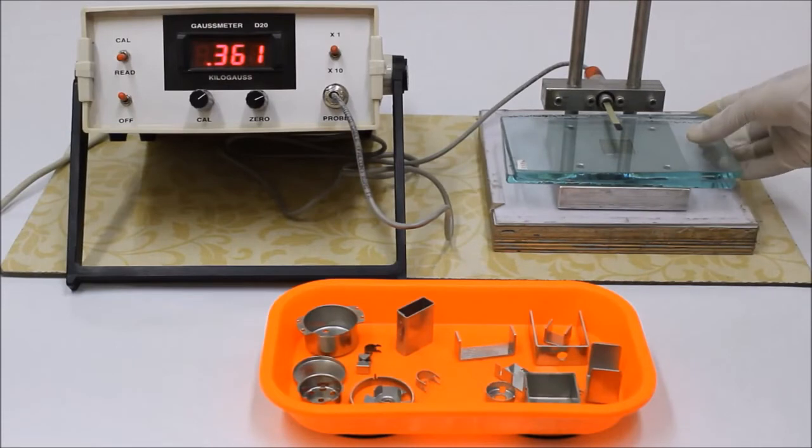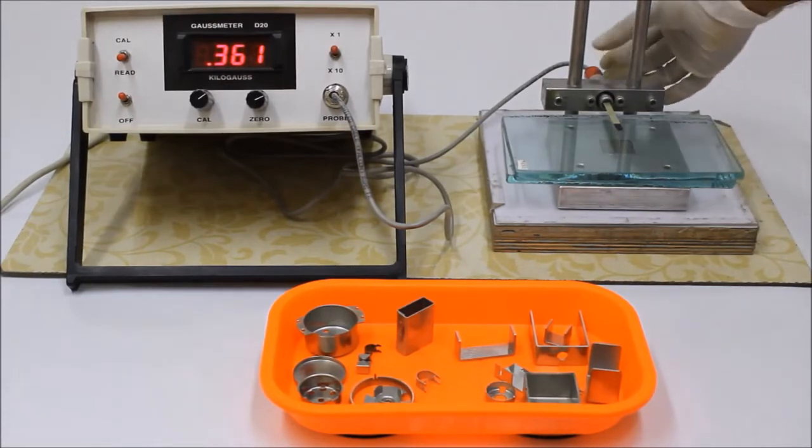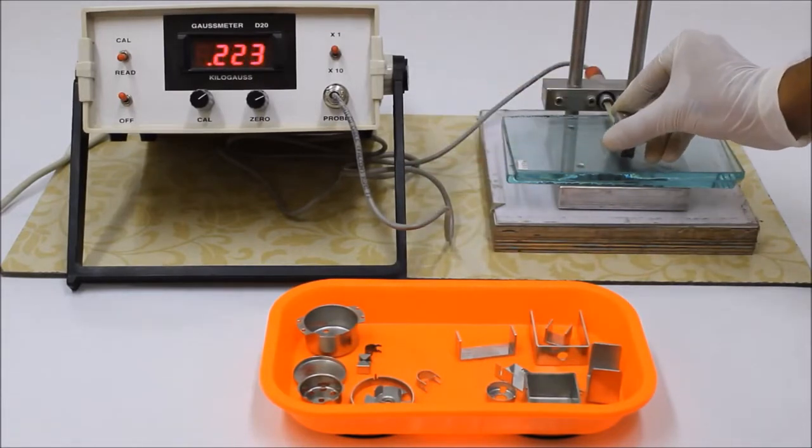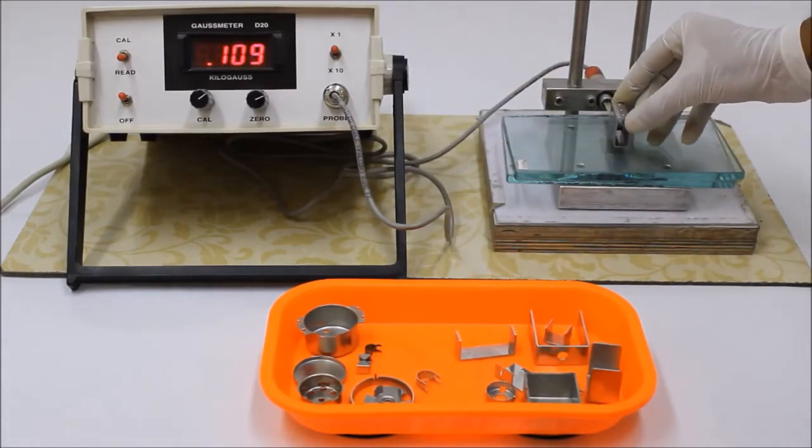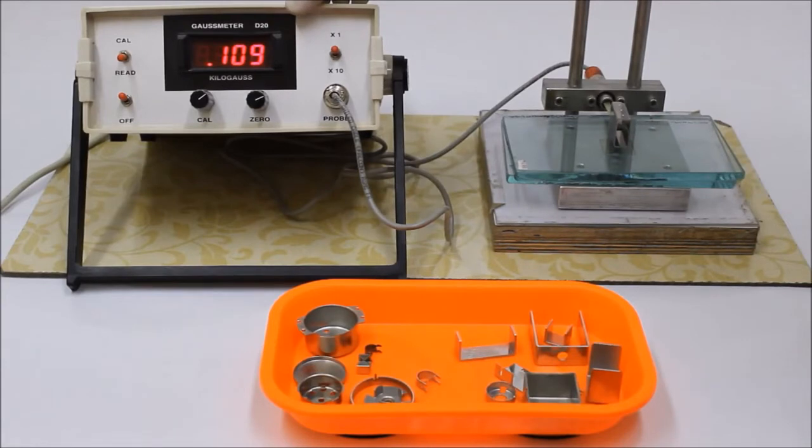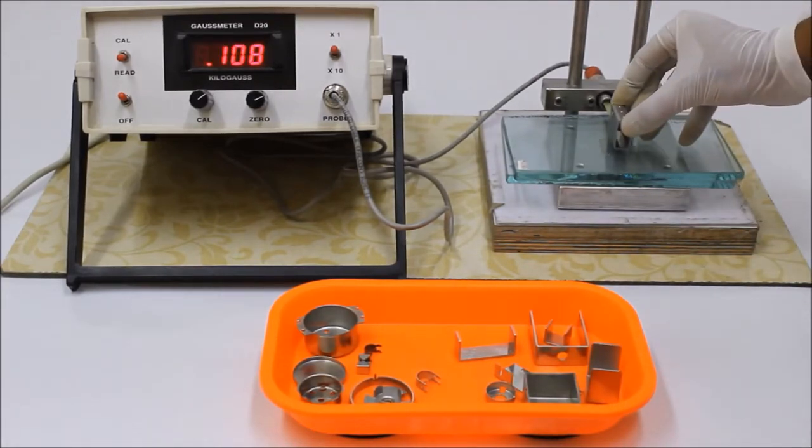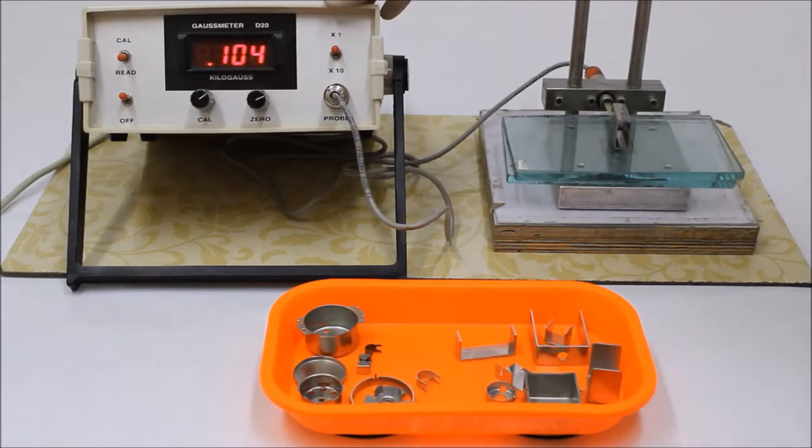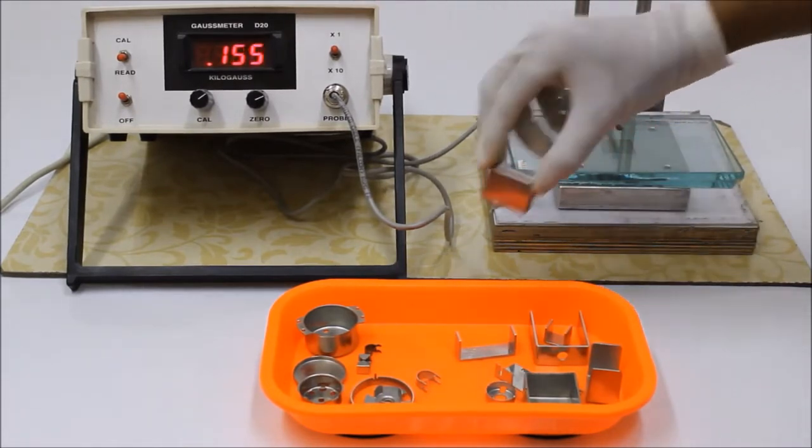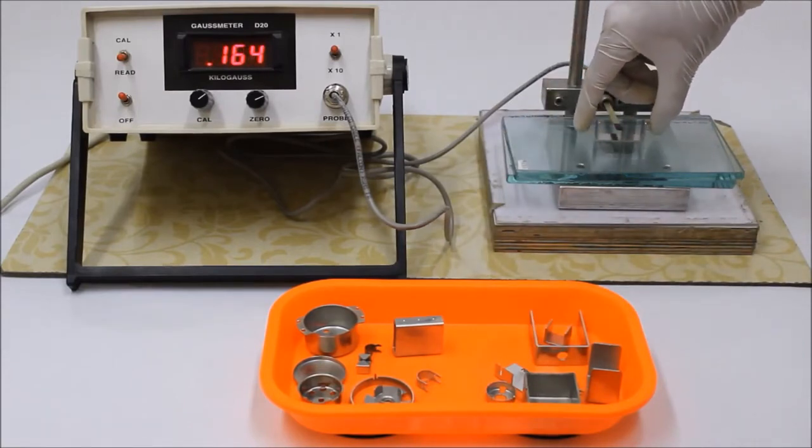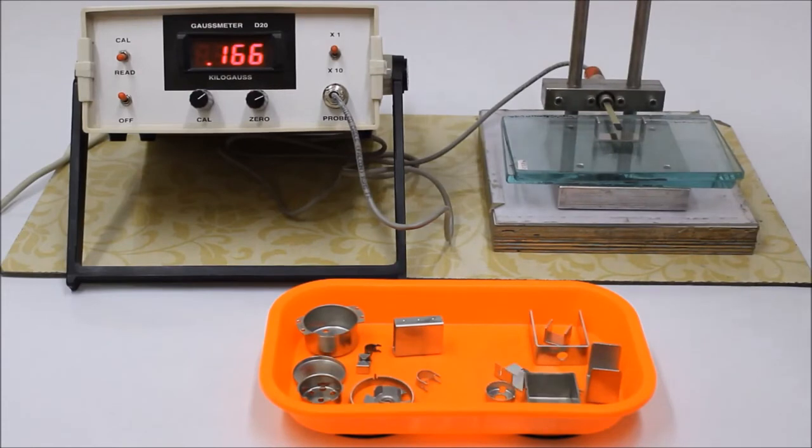Now if I place one of these shields you will see the drop in the reading. This means that the shield brings down the magnetic field to 104 gauss. I'll place another shield. Now this U shield brings down the reading to 167 gauss.